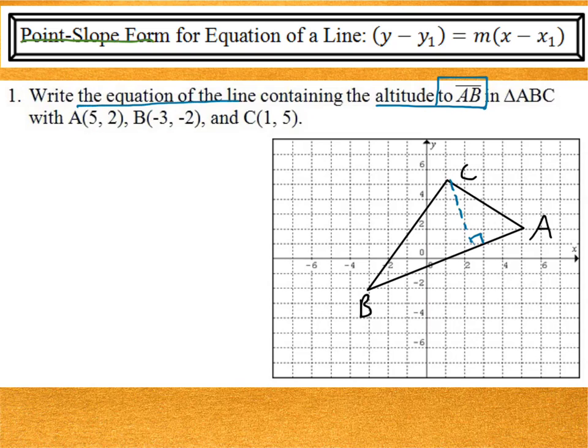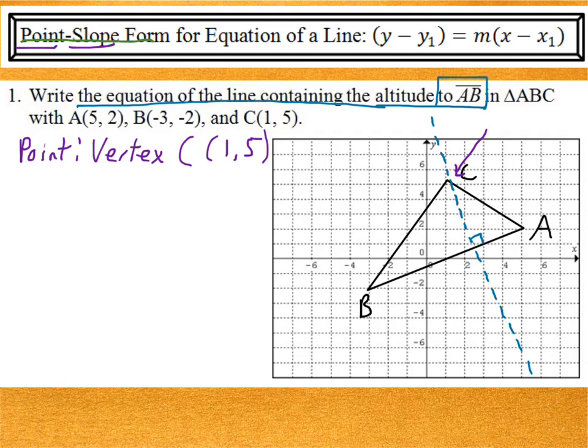Now, why do I say the equation of the line containing the altitude? Well, that's because the altitude itself is just a segment. But if I'm going to write the equation of a line in point-slope form, that's just a part of a much longer line that continues on indefinitely. So, let's actually figure this out. In order to use point-slope form, I kind of need a point and I need a slope. What point am I going to use when I'm writing the equation of this altitude? Well, I do know that the altitude goes through point C. So, therefore, I can use vertex C as my point in point-slope form. So, 1, 5.